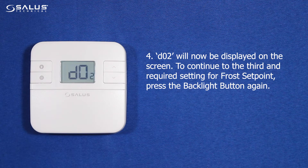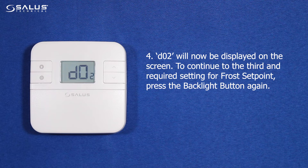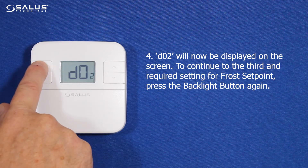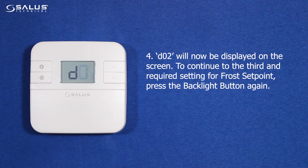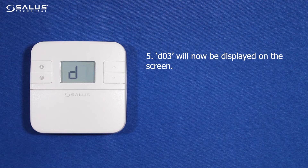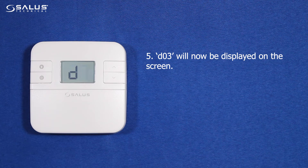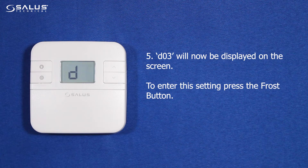Step 4: D02 will now be displayed on the screen. To continue to the third and required setting for frost set point, press the backlight button again. Step 5: D03 will now be displayed on the screen. To enter this setting, press the frost button.